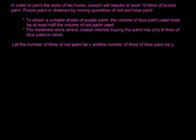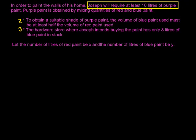There are actually three inequalities or restraints here. The first one is neatly tucked away: Joseph will require at least 10 litres of purple paint. We get purple paint by mixing X and Y, so X plus Y must be at least 10 litres — meaning greater than or equal to 10. If there's one thing you should know at the end of this lesson: at least means greater than or equal to, and at most means less than or equal to. Students often get confused — at least means I have this much and more, so at least 10 litres.